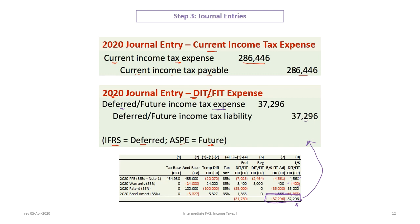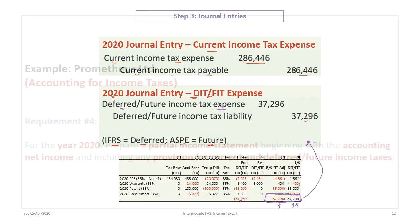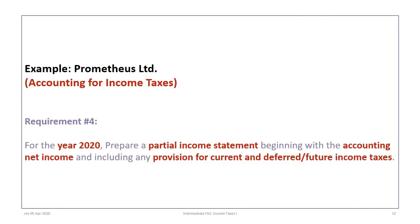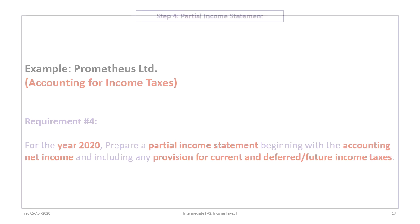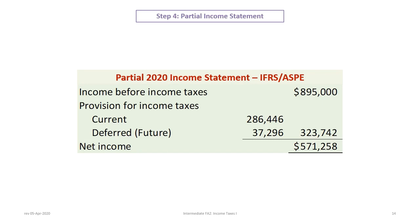The importance of the table cannot be understated — it gives us the source of journal entries and our ending balance sheet balances. Our next requirement is to prepare a partial income statement beginning with accounting net income and including provisions for current and future or deferred income tax expense. We now proceed to step four: preparing the partial income statement, demonstrating a correct version applicable to both IFRS and ASPE.